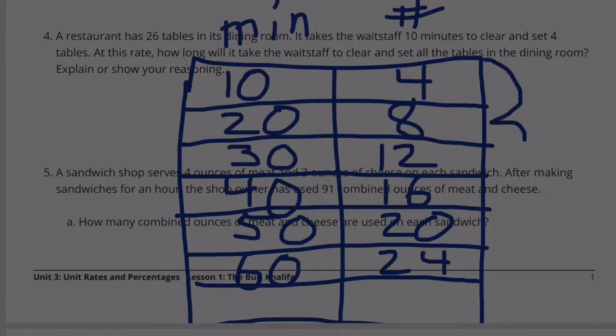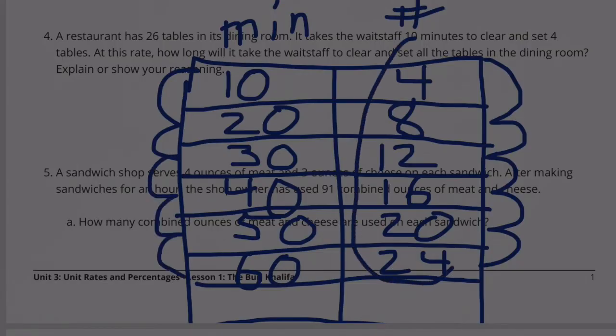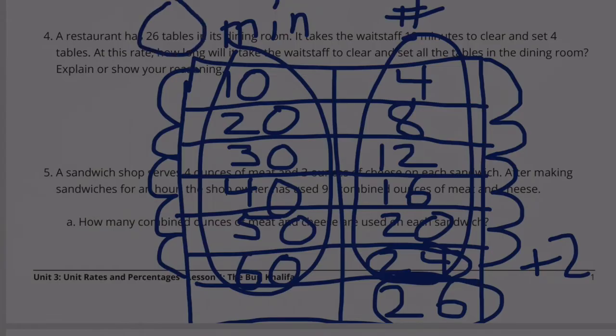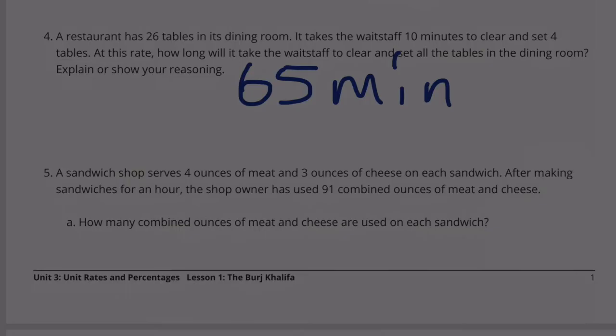So here I've counted by 4. And on the minute side, I've counted by 10. This side here is the number of tables cleared, and this side here is the amount of time. So in 1 hour or 60 minutes, the waitstaff can clear 24 tables. Well, there's 2 more tables left. So instead of counting by 4, now I'm just going to add 2, so it becomes 26 tables. And since I only added 2 instead of 4, 2 is half of 4, I'm going to add half of 10. Half of 10 is 5. 60 plus 5 is 65. It takes 65 minutes to clear 26 tables.